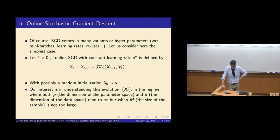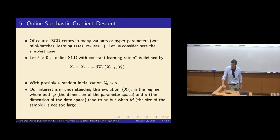You want to understand the evolution in the regime where both the dimension of the parameter space P and the dimension of the data space D are large, but M, the size of the sample, is not too large. The number of steps you can do is not enormous — you cannot have a regime where you do exponentially many steps, because you don't have that much data.